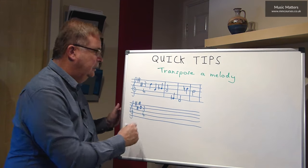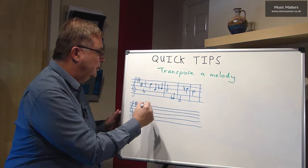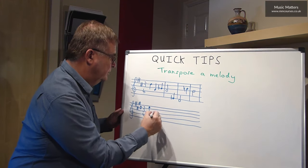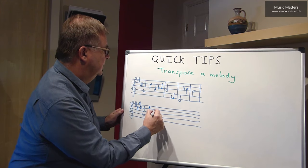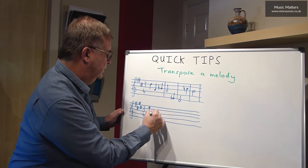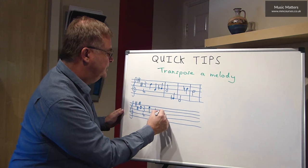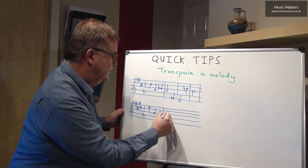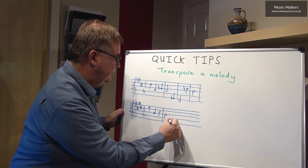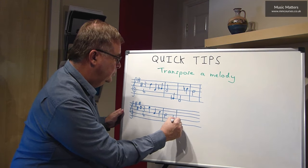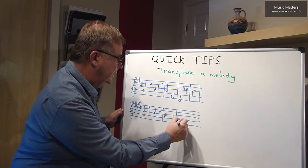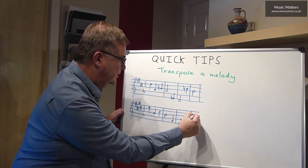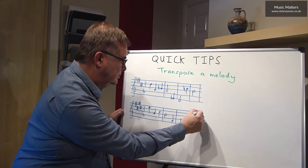Copy in the time signature. Because we're going up, we're just going to put all the notes up one. Don't worry at all for a moment about the flats or the sharps or the naturals — just make sure that all of these notes are going up. You might just have to change some stem direction, like you do there. We're going to take every single note up one, without worrying about the accidentals for now. There we are — that's all the notes transposed up one.